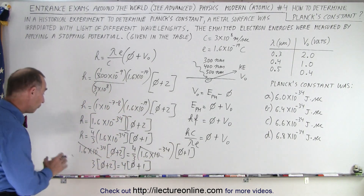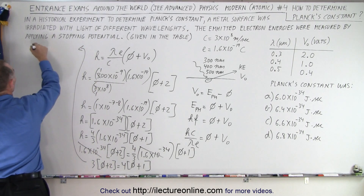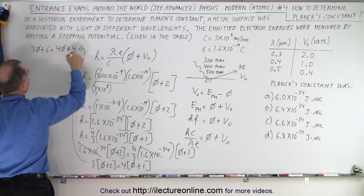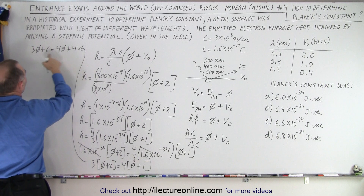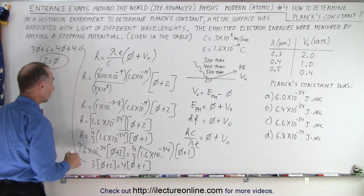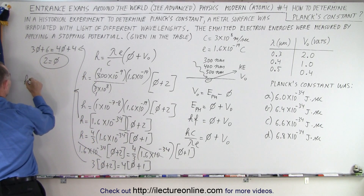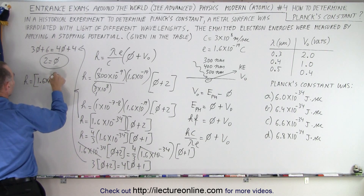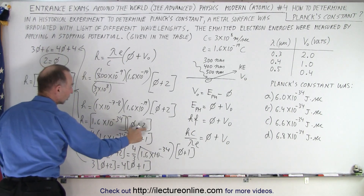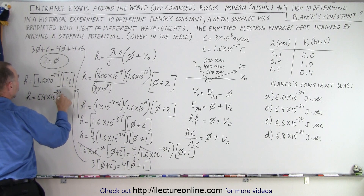We can now solve for the work function. We have 3 times the work function plus 6 equals 4 times the work function plus 4. Subtracting 3 times the work function and 4 from both sides gives: work function equals 2 electron volts. Now we plug back in: h equals 1.6 times 10 to the minus 34 times (2 + 2) equals 1.6 times 10 to the minus 34 times 4, giving Planck's constant as 6.4 times 10 to the minus 34 joule-seconds.